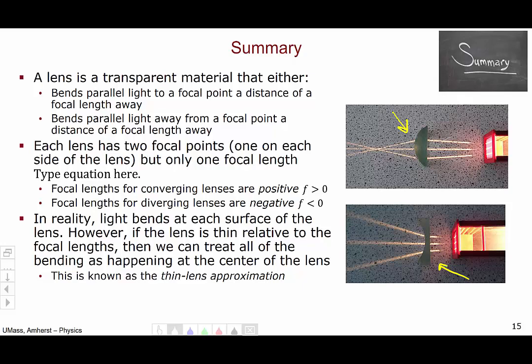Focal lengths for converging lenses are positive, and focal lengths for diverging lenses are by convention negative. In reality, light bends at each surface of the lens. However, if the lens is thin relative to the focal lengths, then we can treat all of the bending as happening at the center of the lens. This is known as the thin lens approximation. This concludes this video.